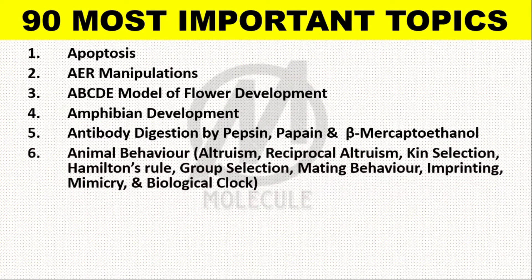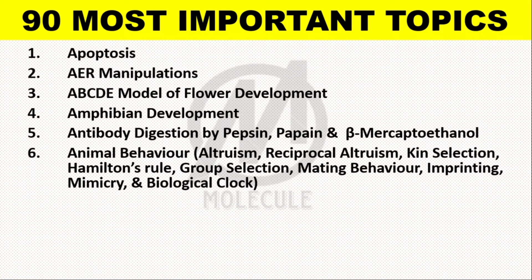Topic 6: Animal Behavior — including Altruism, Reciprocal Altruism, Kin Selection, Hamilton Rule, Group Selection, Mating Behavior, Imprinting, Mimicry, and Biological Clock.